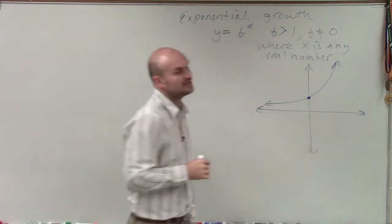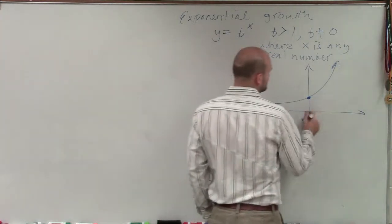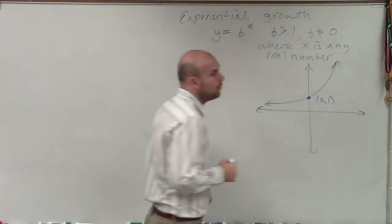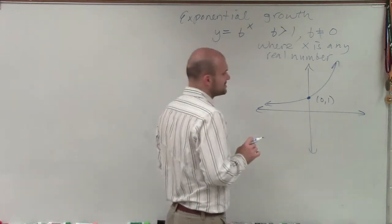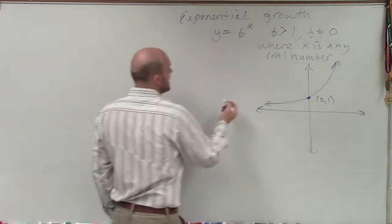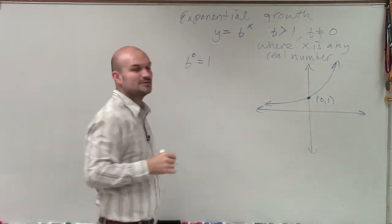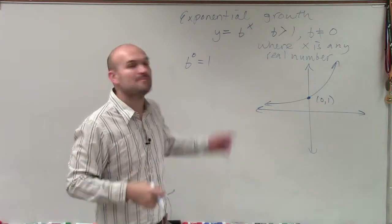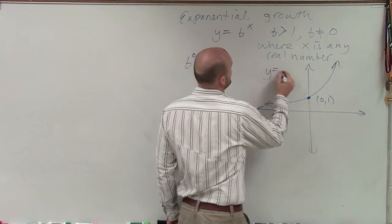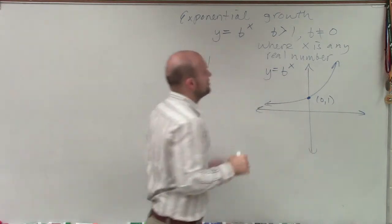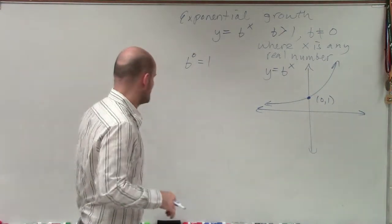It's going to have a very important y-intercept at (0, 1). When I put 0 in for x, we know that's always going to equal 1. It doesn't matter what the base is, it's always going to equal 1. The graph is going to fall and decrease to the left and then rise and increase to the right.